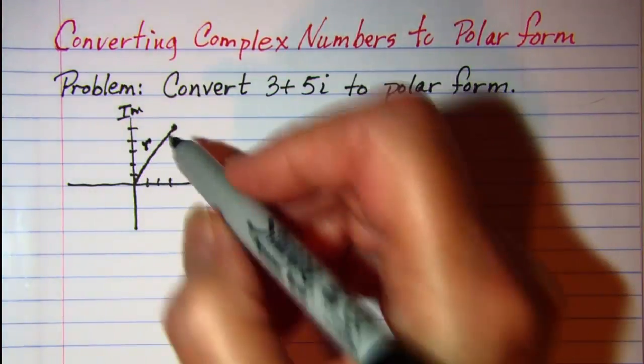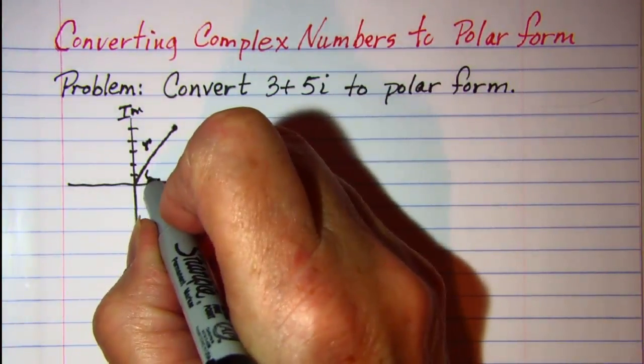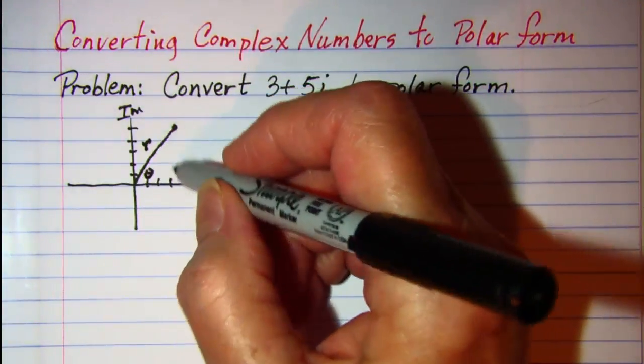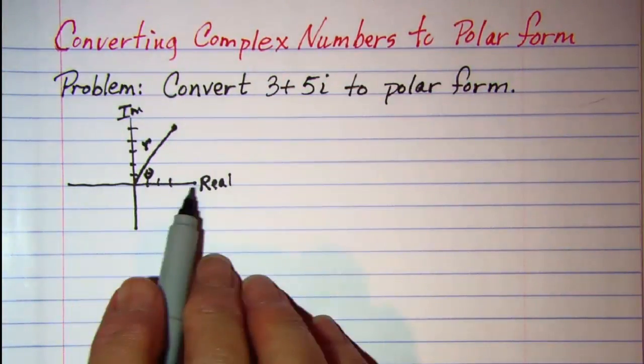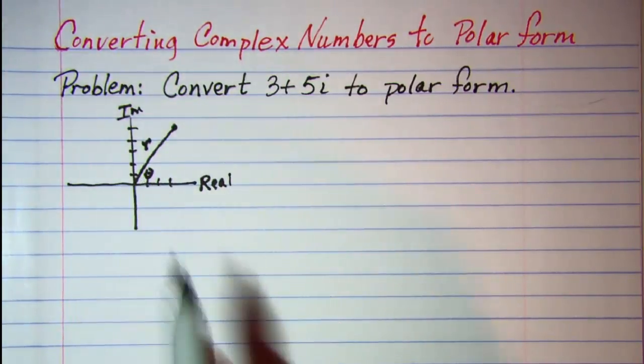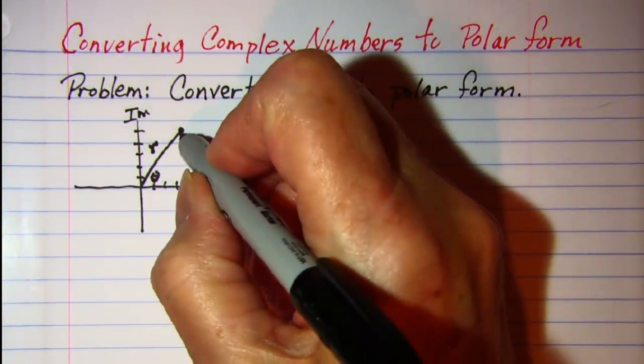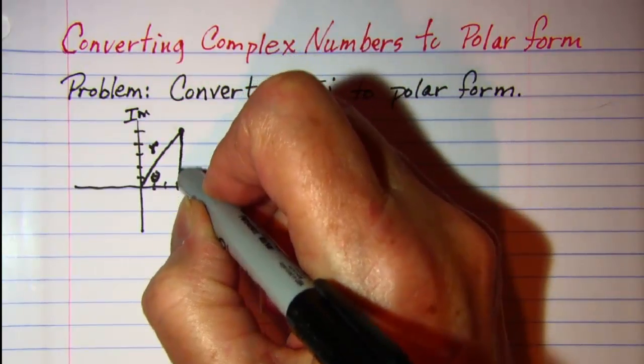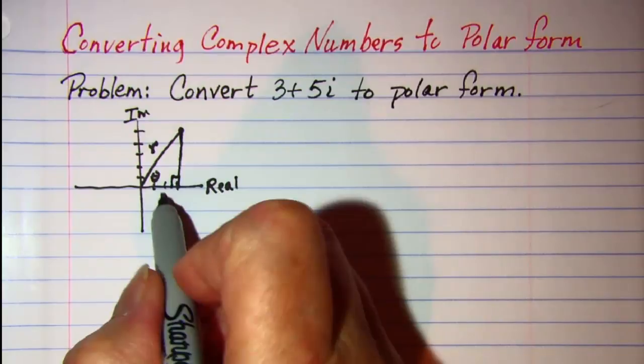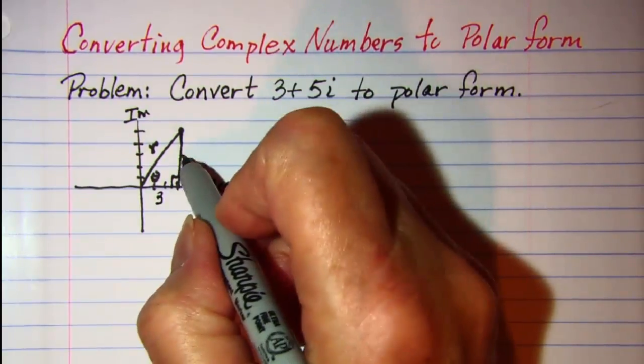And I want the angle that the vector makes with this horizontal axis and I'll call that theta. Now if we look at our right triangle here this length is 3 and this length is 5.